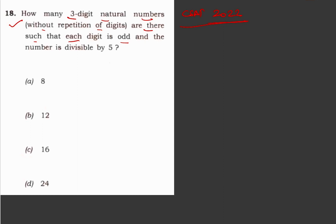It is a very easy question. First, we have to figure out the conditions. Condition number one is without repetition of digits, that means all digits are distinct or different. And you have to create a 3-digit natural number.